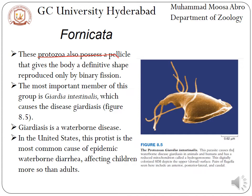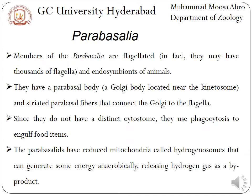These protozoans also possess a pellicle that underlies the plasma membrane, giving a definite shape to the body. The most important member of this group is Giardia intestinalis, which causes the disease known as giardiasis. According to United States statistics, this disease causes epidemic diarrhea and it occurs more in children than adults.